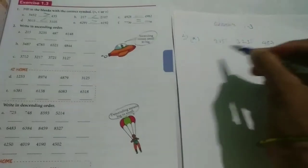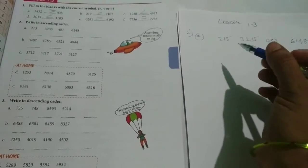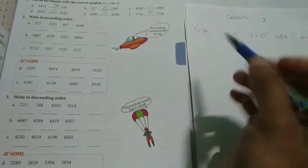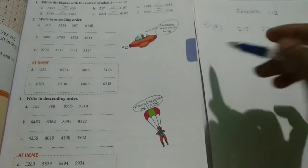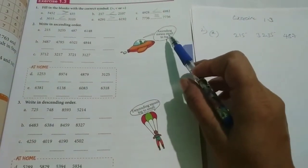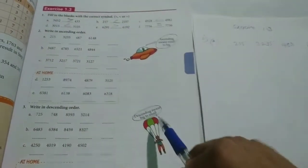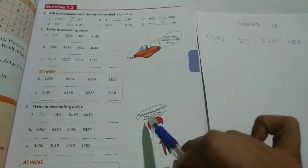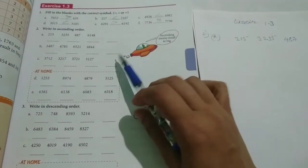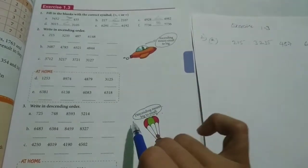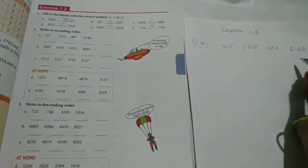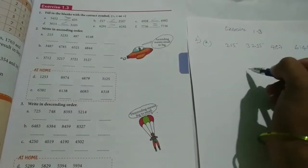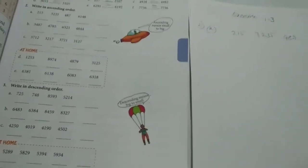Ascending order means small to big. Descending order means big to small. So ascendingly, small number to big number we have to write. Descendingly, big number to small number we have to write. So here, first we have to prepare the chart, then it will be easy.